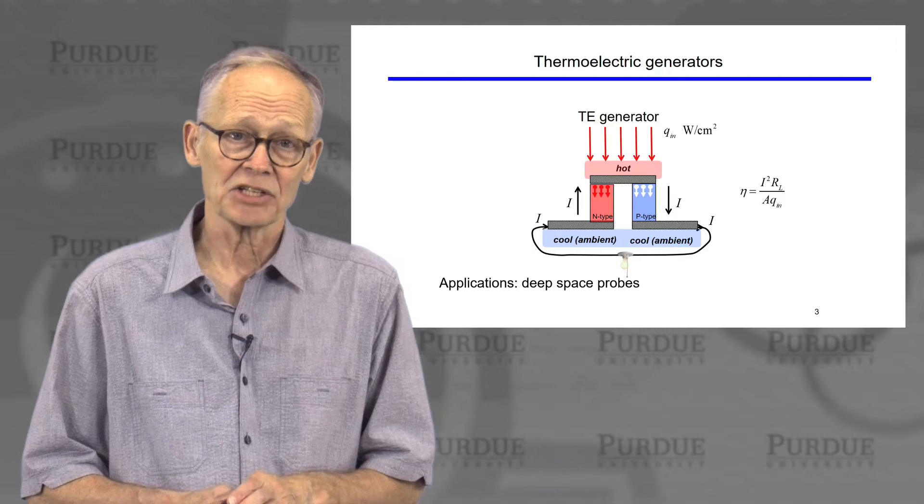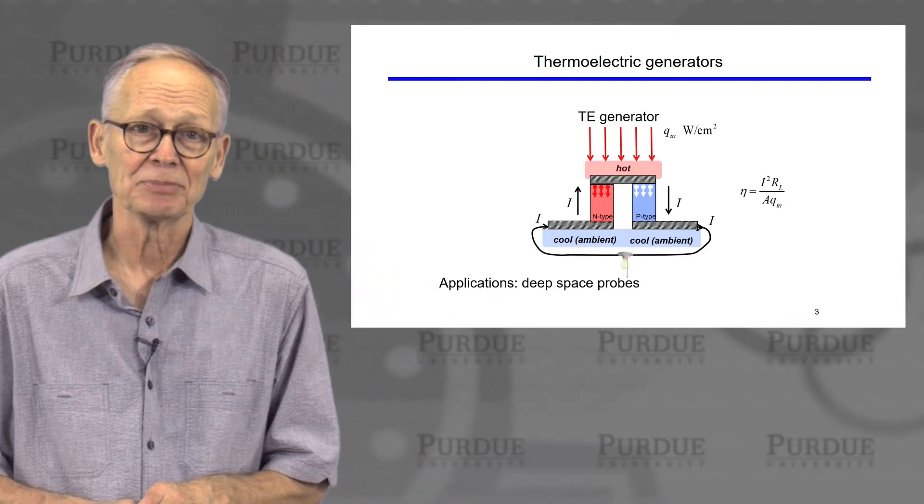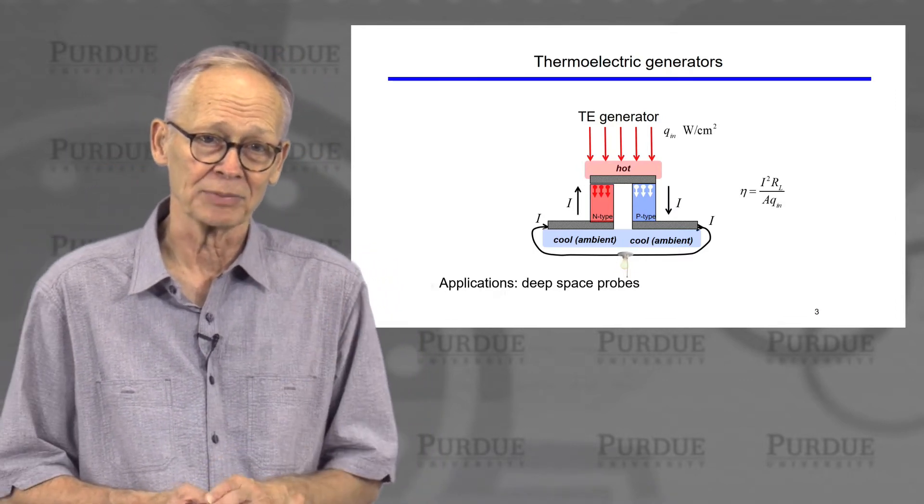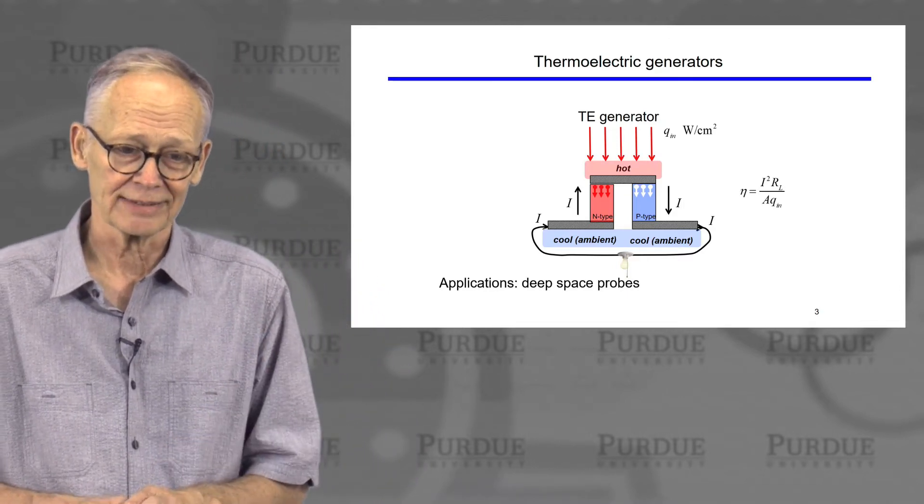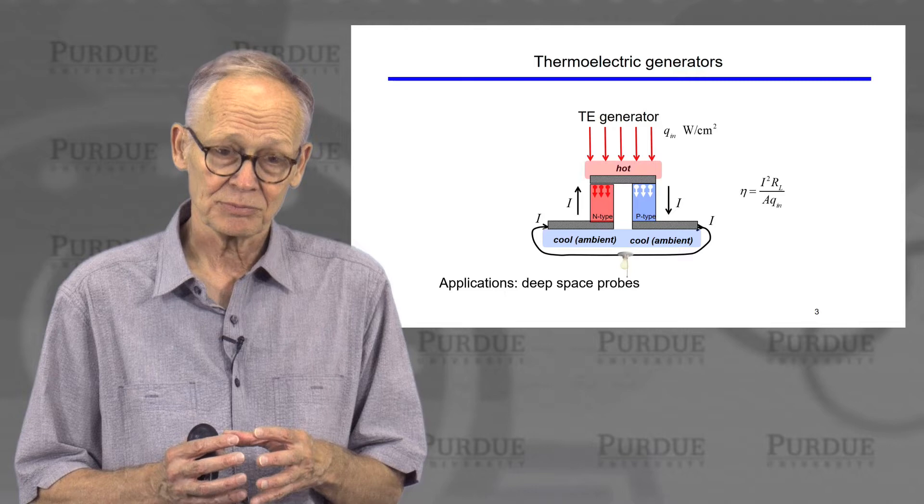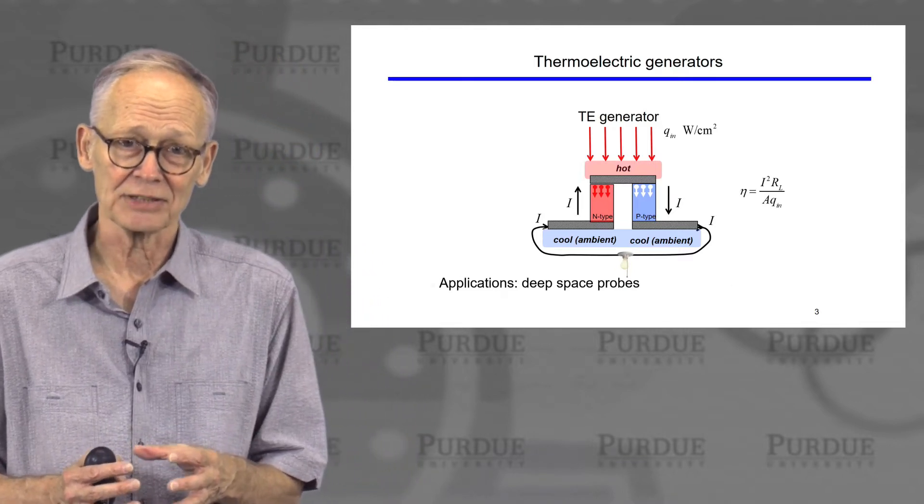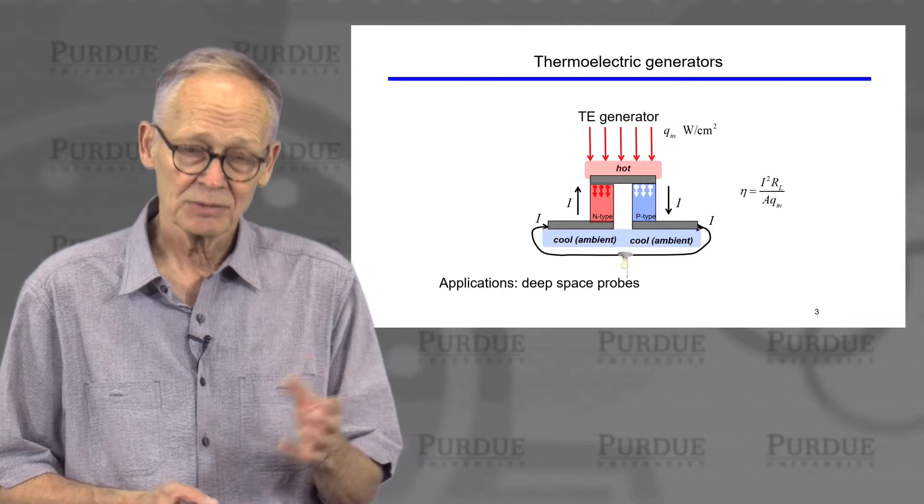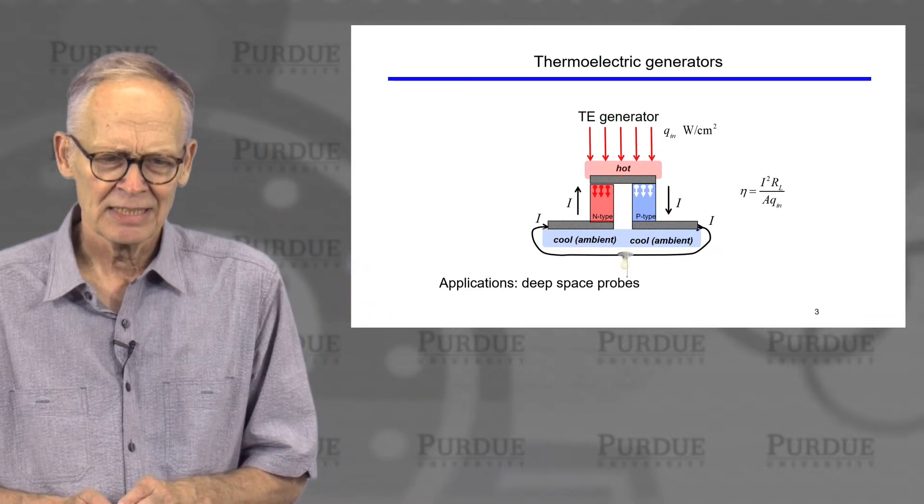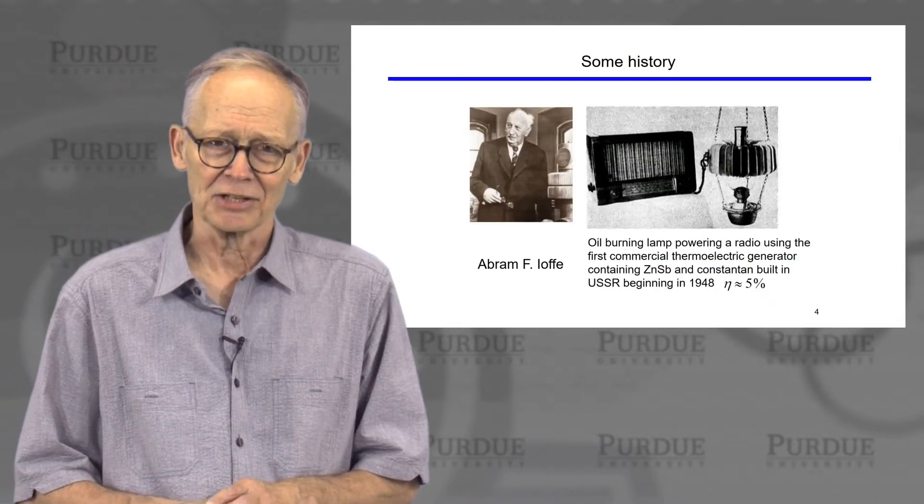One application for a technology like this is in remote deep space probes. When you're far away from the sun, you can't use solar cells, photovoltaic systems. If you have a radioactive heat source that lasts for a long time, you can convert that heat into electricity with thermoelectric generators. So those are two applications of the technology.